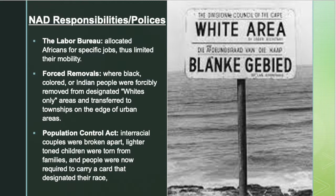Forced removals: black, colored, or Indian people were forcibly removed from designated white-only areas and transferred to townships on the edge of urban areas. The Population Control Act meant interracial couples were broken apart, lighter-toned children were torn from their families, and people were now required to carry a card that designated their race.